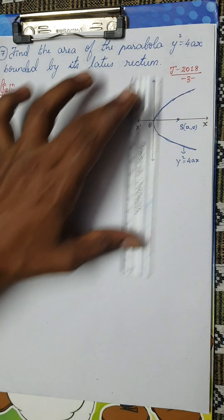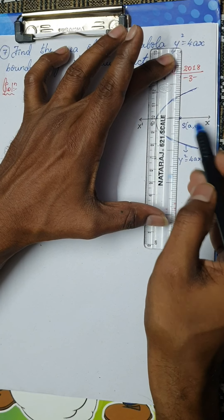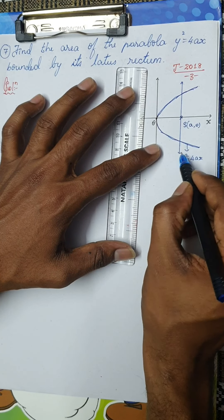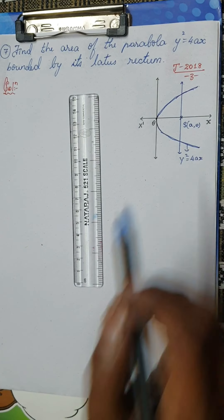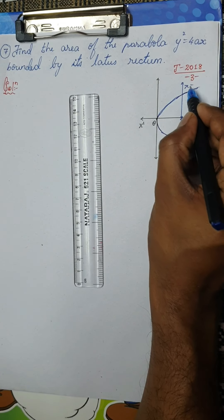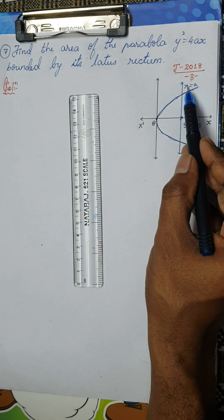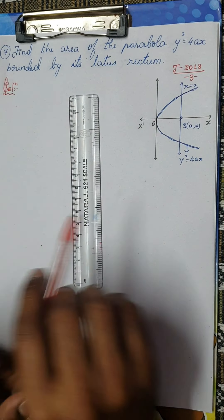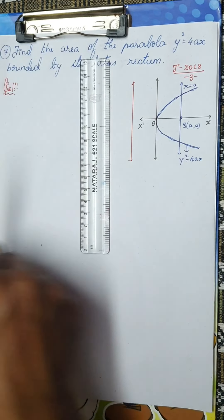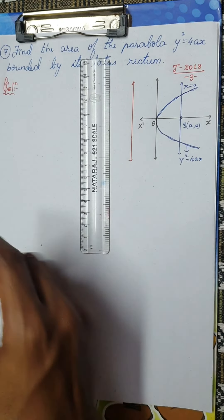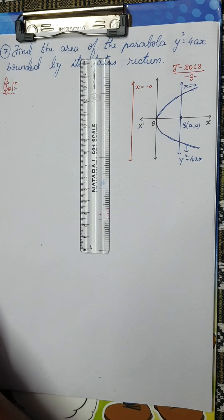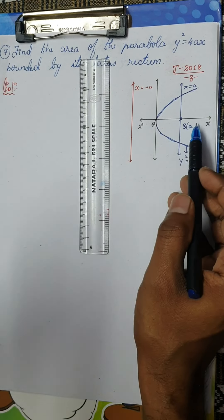The focus of the parabola is denoted by S, which is (a, 0). The latus rectum is a line passing through the focus and perpendicular to the axis of the parabola — we take it as LR. The equation of the latus rectum would be x = a. Always remember, the equation of the latus rectum and the equation of the directrix are in opposite directions — the directrix is x = −a.